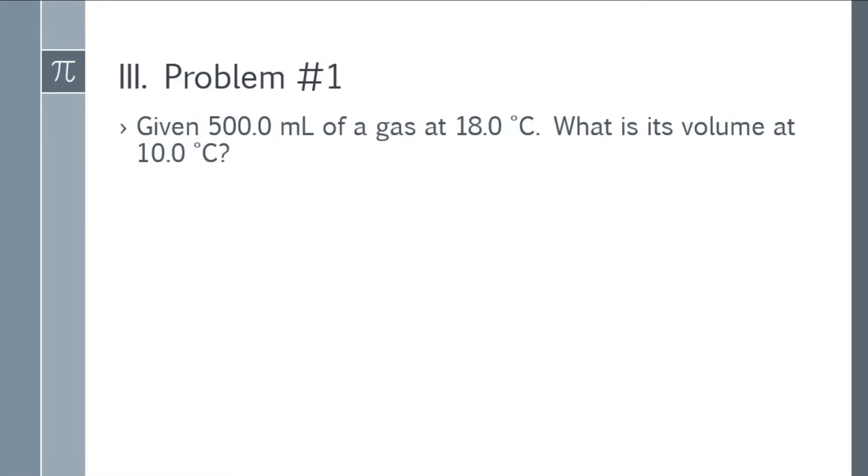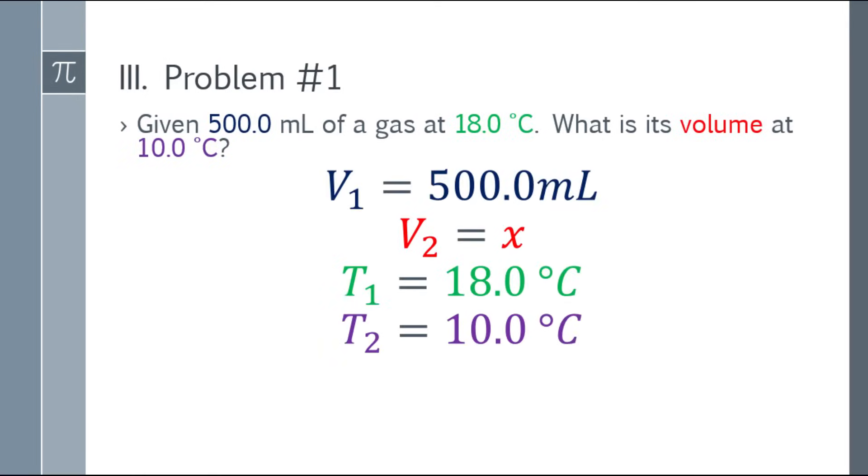So let's start with the first problem. Given 500 mL of a gas at 18.0°C, what is its volume at 10.0°C? Okay, first, list all the given. Our V1 here is 500 mL, because that's the original. We need to find V2, so that will be x. T1, the original temperature, is 18 degrees Celsius. And it becomes 10 degrees Celsius, so that will be T2. The values are color-coded to guide you.